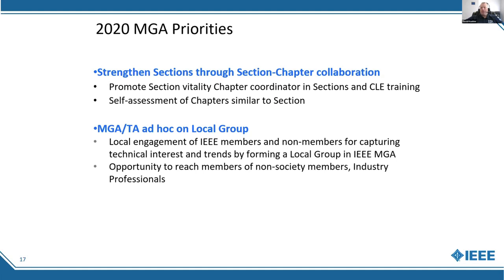Local groups would be provided resources similar to our current sections, affinity groups, and chapters within IEEE. The goal is to provide an opportunity to reach out to non-society members and industry professionals, giving them a loose framework for conducting activities at a local level that we hope would be attractive.